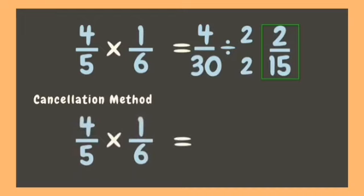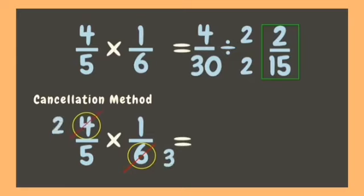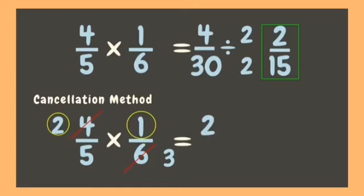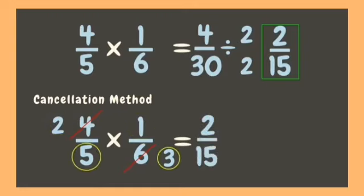Can you find a numerator and denominator which have a common factor? Very good — four and six have a common factor of two. Let us divide them by two. Six divided by two is three, while four divided by two is two. Now let's multiply: two times one is two, five times three is fifteen. Our answer is two-fifteenths.